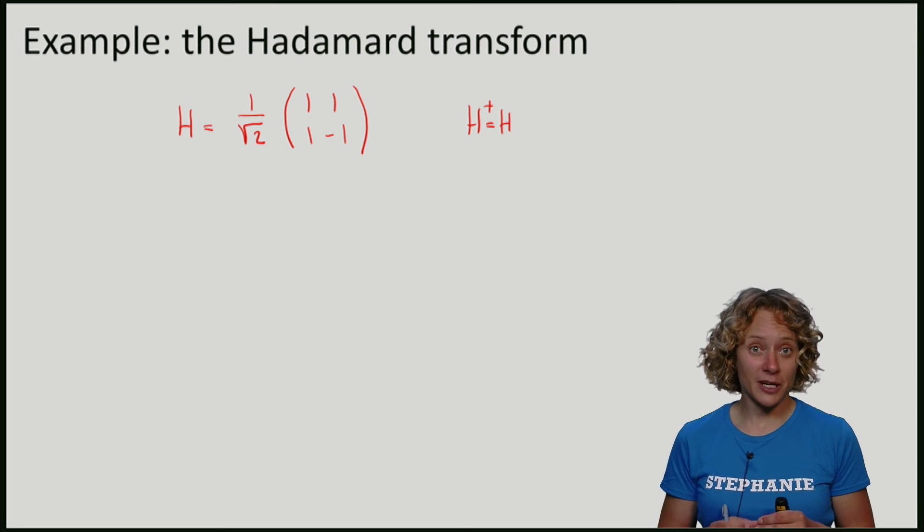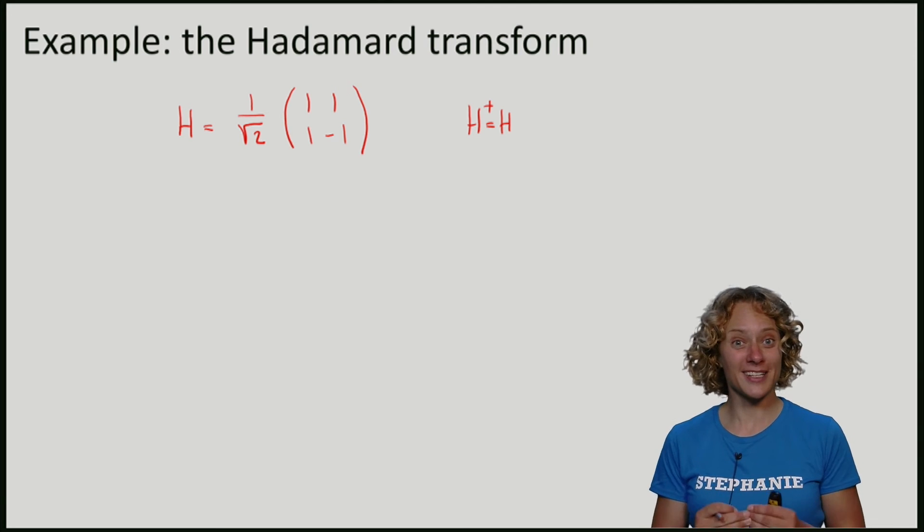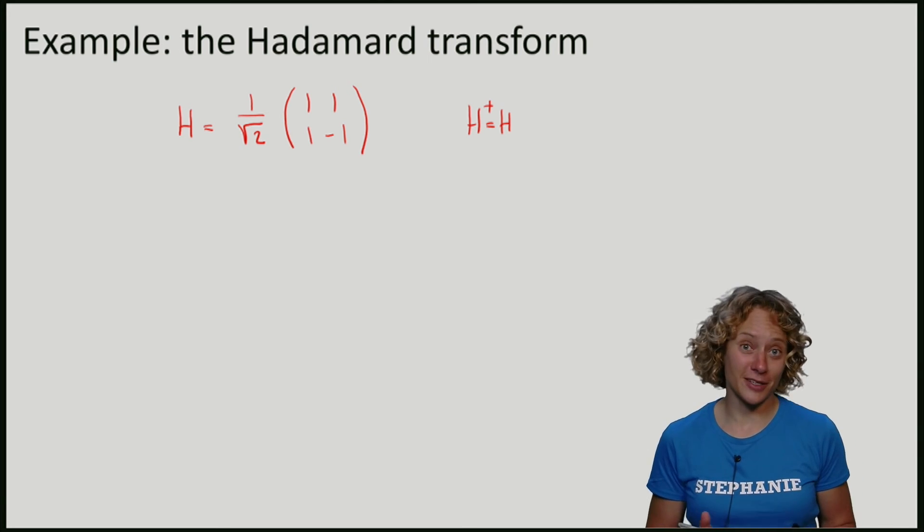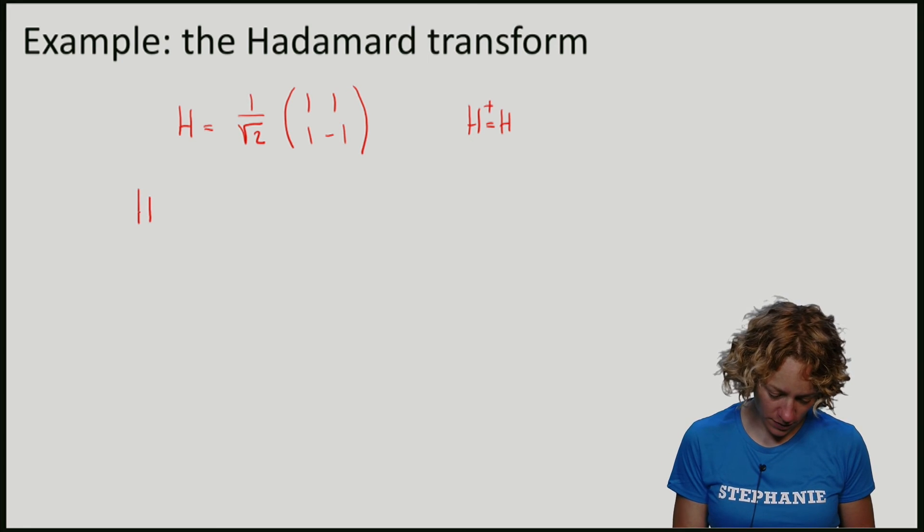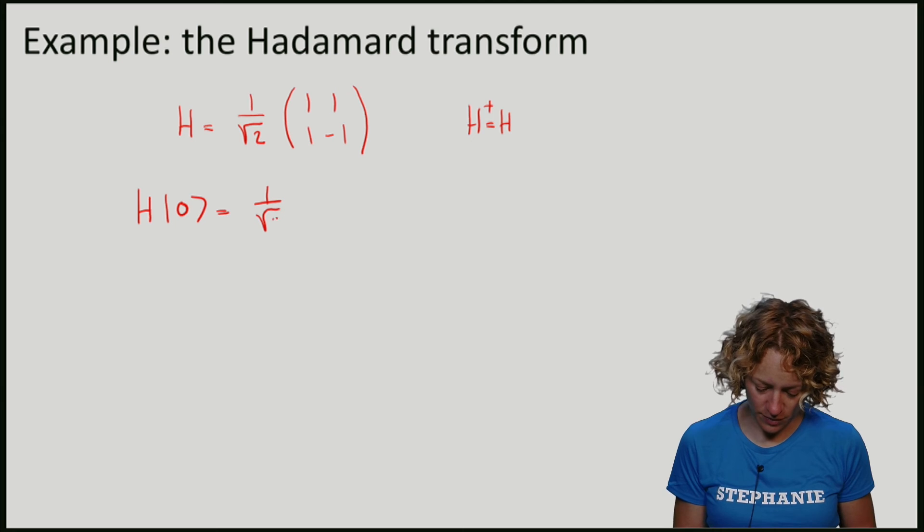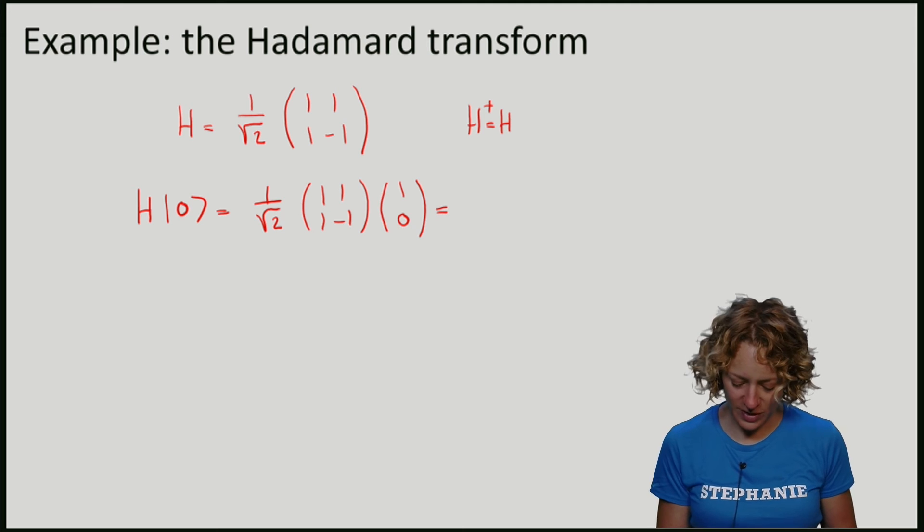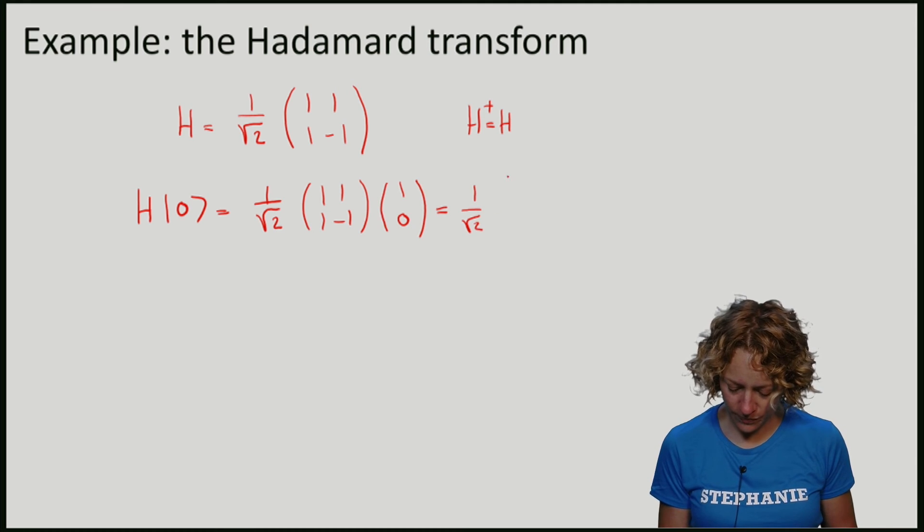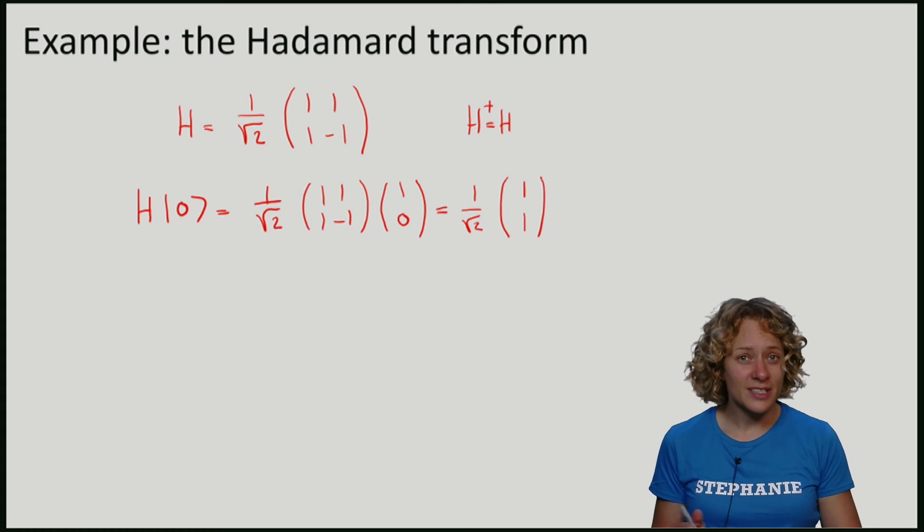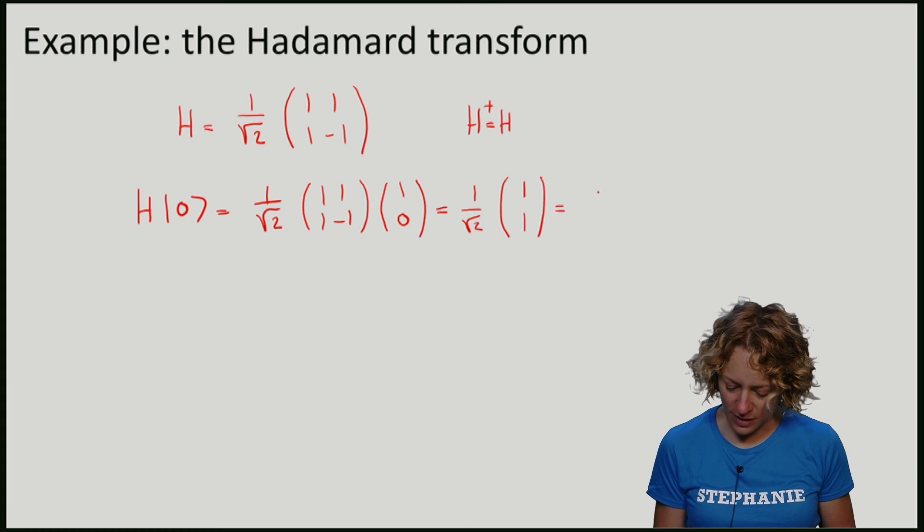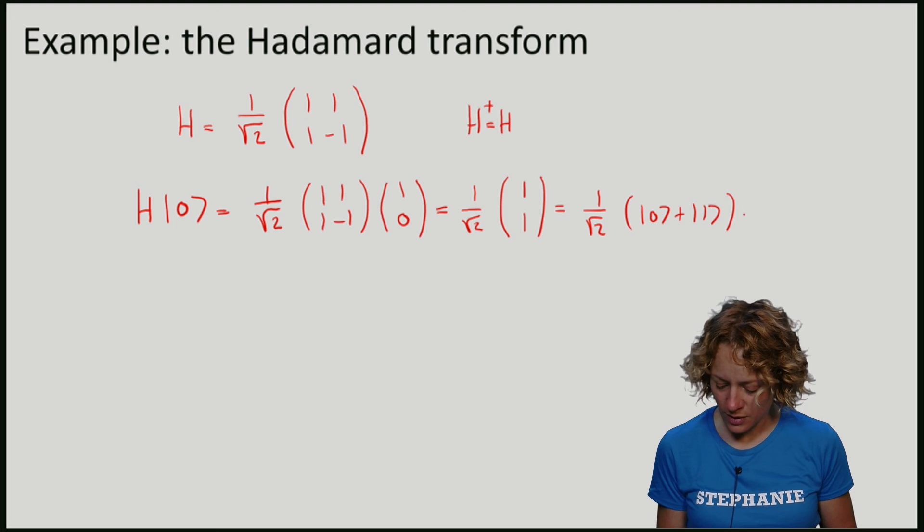Let's see what this unitary actually does. Let's for example apply this unitary to the zero of the standard basis. Let me write out the unitary and the vector of the standard basis. So if I perform this calculation, I get 1 over square root 2 times 1, 1. And we've seen this state a few times, namely I can also write this as 1 over square root 2, zero plus one, which is the state plus.